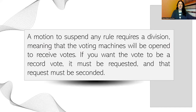A motion to suspend any rule requires a division — meaning the voting machine I explained will be open to receive the vote. And if you want a record vote, then it would be a record vote. You do have to request that, and that request must be seconded.